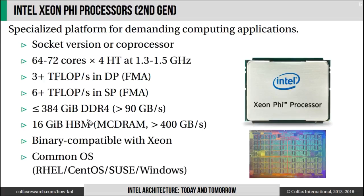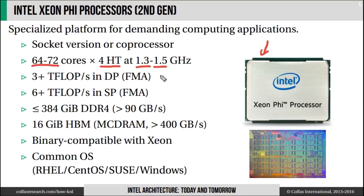The reason to use an Intel Xeon Phi processor is its performance. Inside every chip, depending on the model, you will find between 64 and 72 cores with 4-way hyperthreading — Intel cores with vector instruction support. They are clocked between 1.3 and 1.5 GHz.